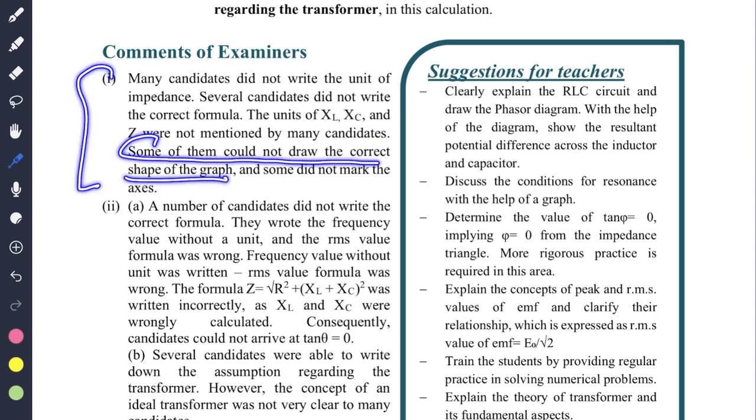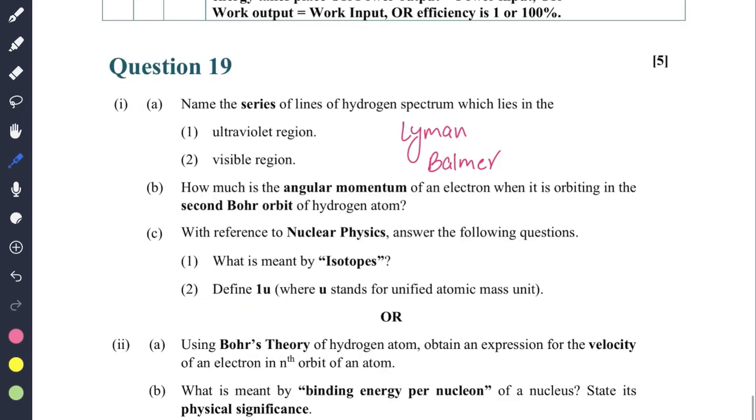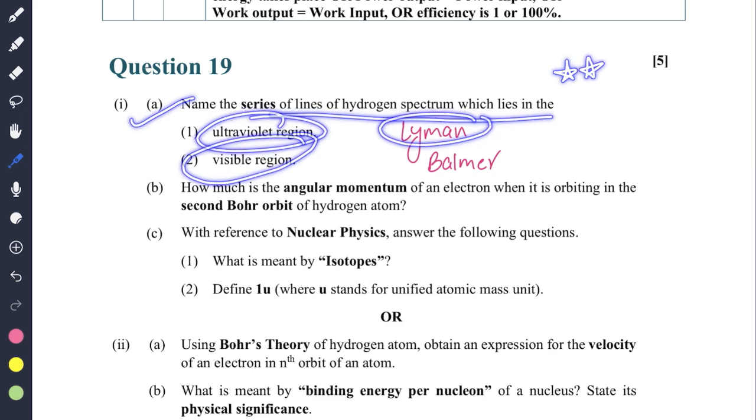This is how the marks are awarded. See: name the series of lines of hydrogen spectrum. This is also important - ultraviolet region is Lyman series, visible region is Balmer series.